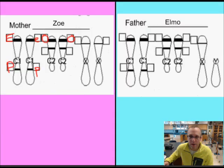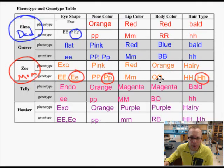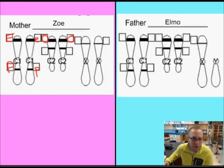The next one on chromosome number 2 is lip color. So let's go place Zoe's lip color. Her lip color is red, we determined, capital M, lowercase m. So I'm going to go and I'm going to place that in this box and that in this box.